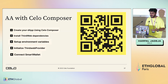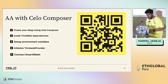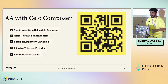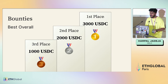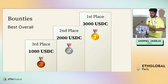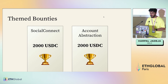Use Celo Composer for a quick head start on account abstraction — again, just five steps. Scan the QR code for details, or grab a physical copy on your way out. To summarize: we have five bounties total. First place gets 3,000 USDC, second gets 2,000, and third gets 1,000 USDC. The two themed bounties are Social Connect and account abstraction, at 2,000 USDC each.